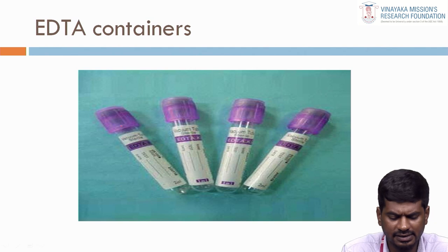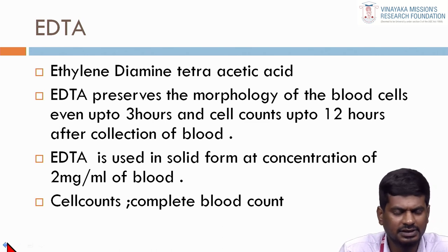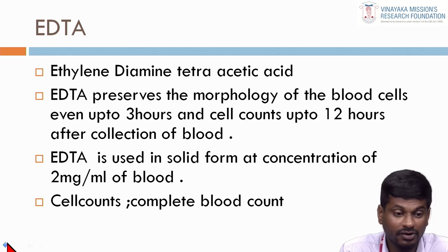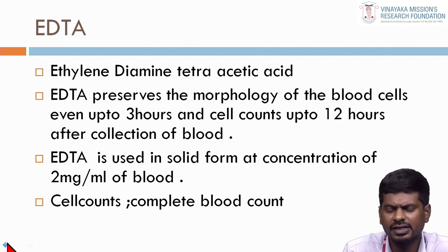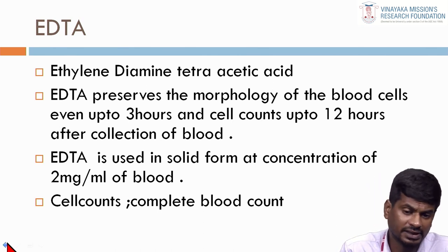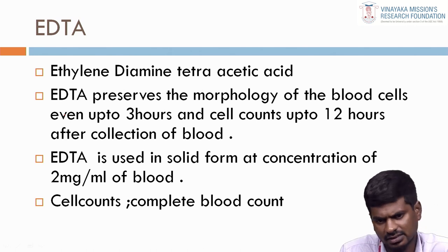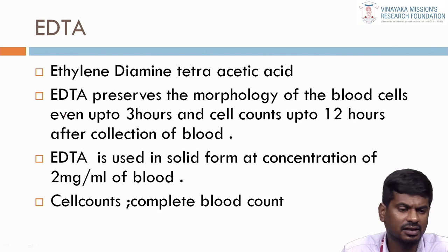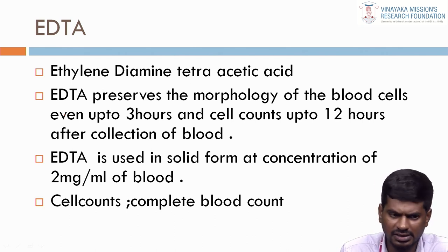These are the EDTA containers, capable of 2 mg per mL. For cell count, EDTA can be used up to 12 hours; for morphology of cells — such as in peripheral blood smear examination to check morphology and differential leucocyte count — we use EDTA samples. From collection, EDTA can be used up to 3 hours for morphology. After that, cells may undergo shrinkage or bulging, which causes errors.